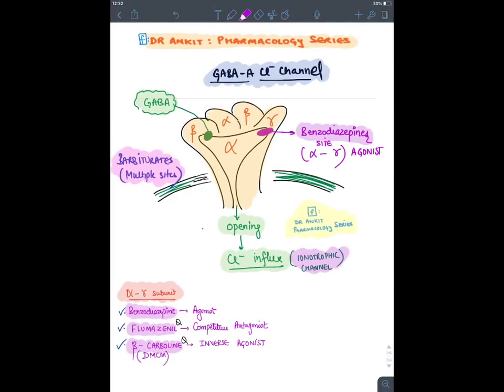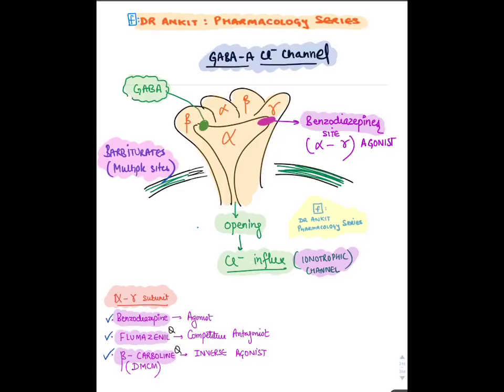Barbiturates and benzodiazepines open the GABA-A chloride channel present on a nerve. When this channel opens, chloride ions flow inside the neuron — there is chloride influx. When negative charge moves inside the neuron, it becomes hyperpolarized and suppressed, producing sedation and hypnosis.